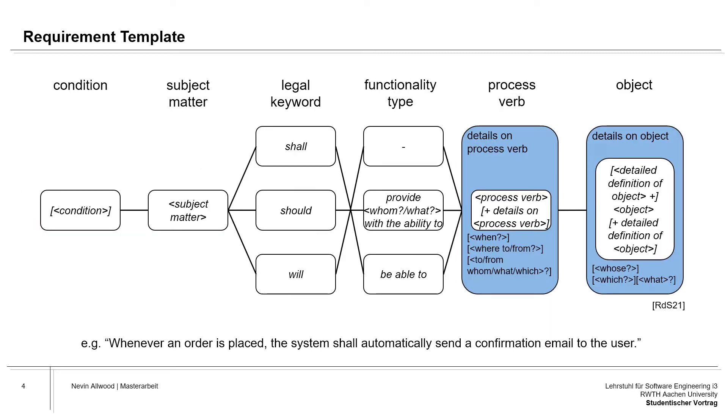Since natural language requirements are inherently ambiguous, there are approaches to reduce this ambiguity. One of those approaches is formulating requirements using a specification template like this one for functional requirements. It defines multiple sentence elements that have to be filled in the prescribed order to construct a requirement. The shown template was also used for this thesis and consists of an optional condition,